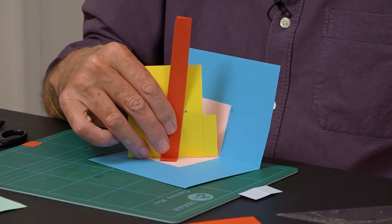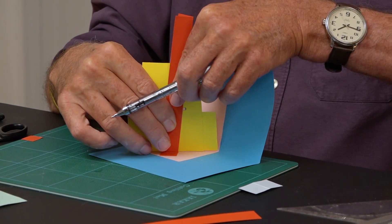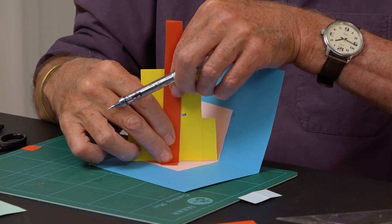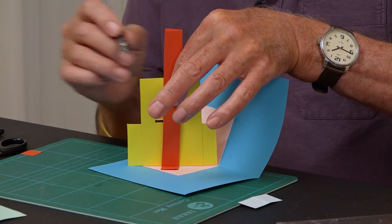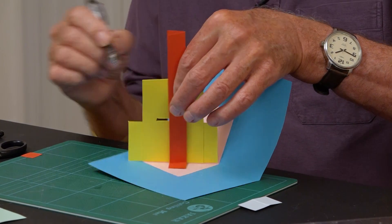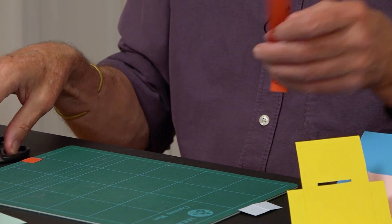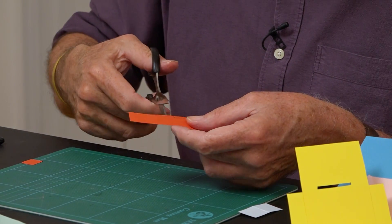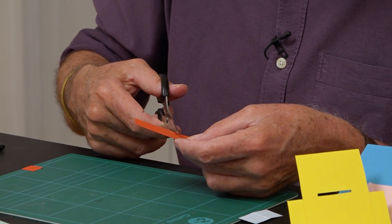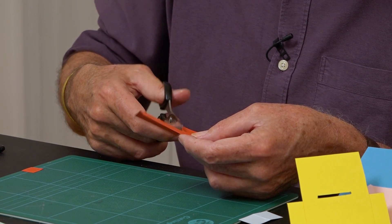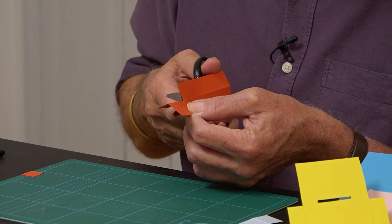So I'll just mark that. So that's flush with the bottom. This is where the other tab is going to be. So I'm going to cut that to make a tab on it. And cut that off.